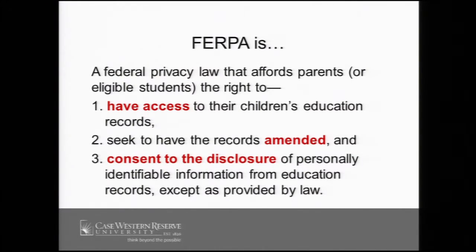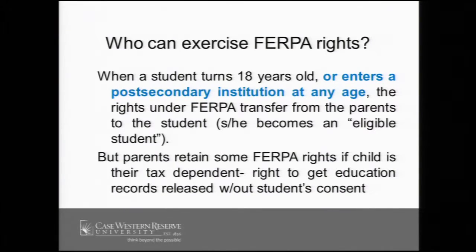So FERPA is about education records. For elementary school students, it gives their parents the right to have access to their children's records, the right to seek to have them amended, and the right to consent to the disclosure to third parties of personally identifiable information in those records, with certain exceptions. What's very important for us to know is when a student turns 18 or enters a post-secondary institution at any age, the rights under FERPA transfer from the parents to the student, and that individual is called an eligible student under FERPA. Once an eligible student possesses the FERPA rights, their parents still may have certain rights in limited circumstances and at the institution's discretion — generally when the student is a tax dependent of the parents, or if there's a health or safety emergency involving the student.